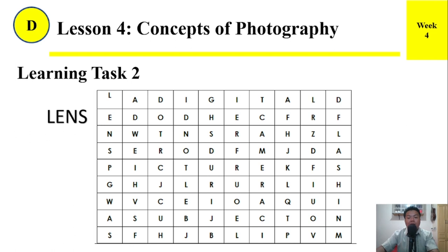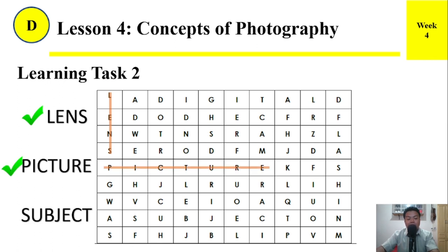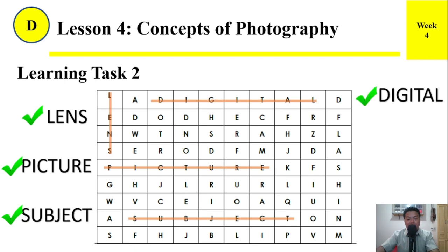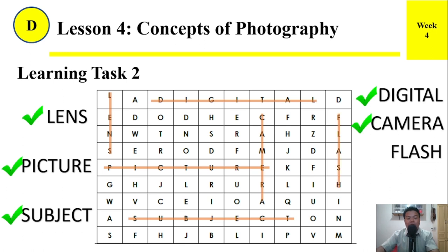Number one: lens — correct. Next: picture — correct. Subject — check. Digital — check. Camera — check. And number six: flash — check.